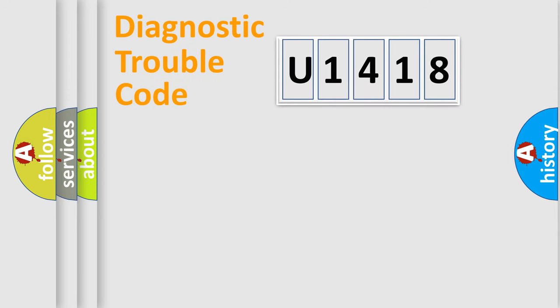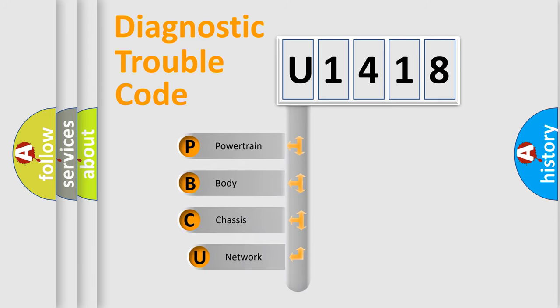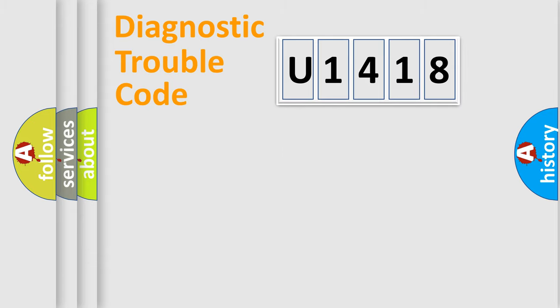Let's do this. First, let's look at the history of diagnostic fault code composition according to the OBD2 protocol, which is unified for all automakers since 2000. We divide the electric system of automobile into the four basic units: powertrain, body, chassis, network.